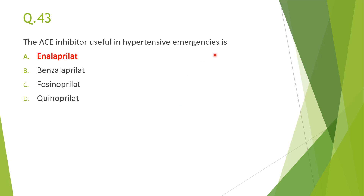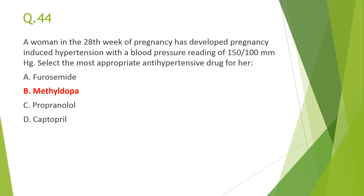Next: the ACE inhibitor useful in hypertensive emergencies is enalaprilat. Enalaprilat is the active metabolite generated from enalapril. Enalapril is given by oral route, while enalaprilat is given by IV route for hypertensive emergencies.